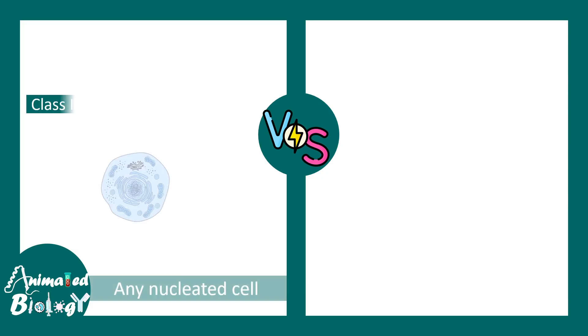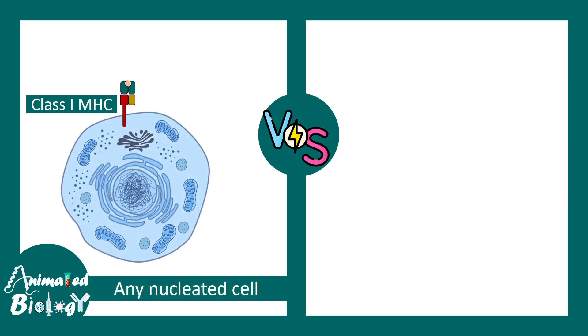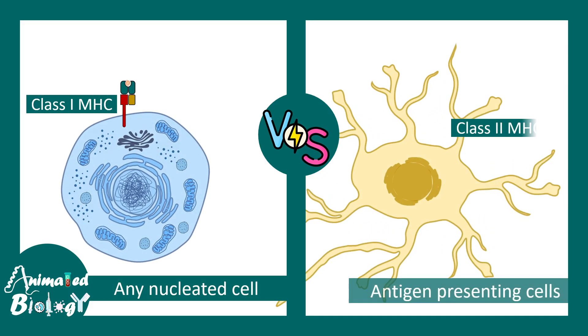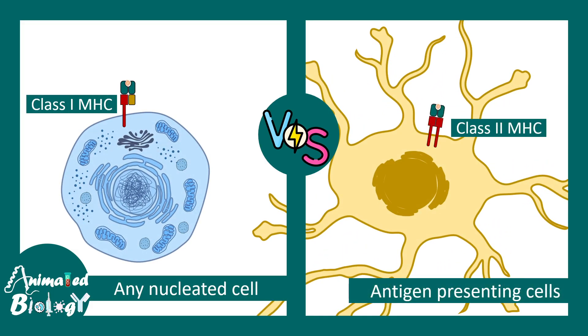Class 1 MHC can be found in any nucleated cell type, and class 2 MHC is found in professional antigen presenting cells such as dendritic cells, macrophages, or B cells.